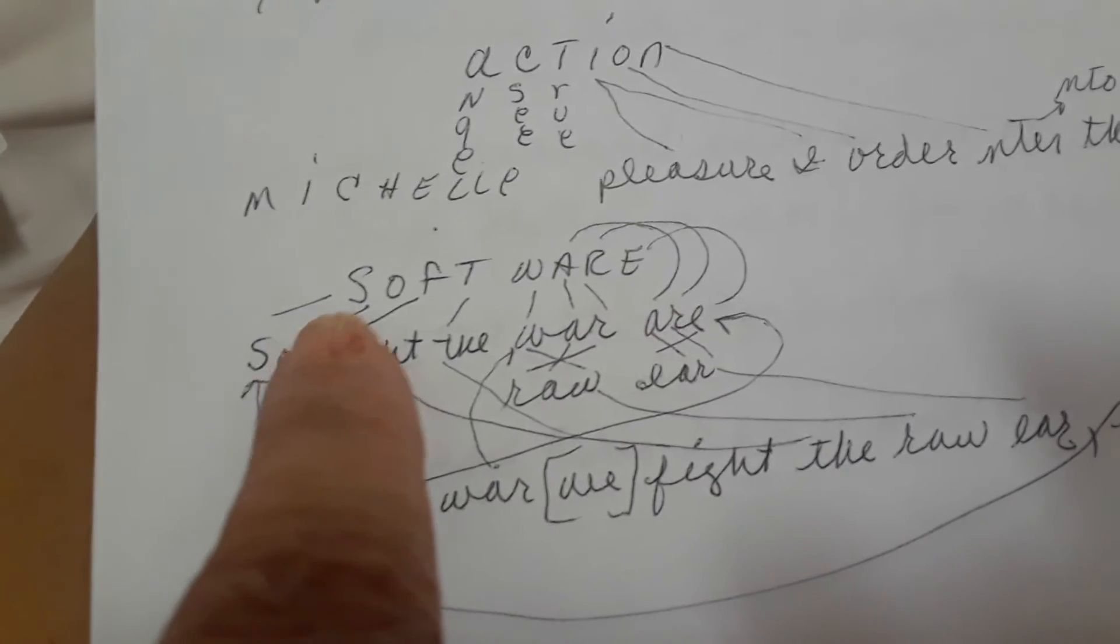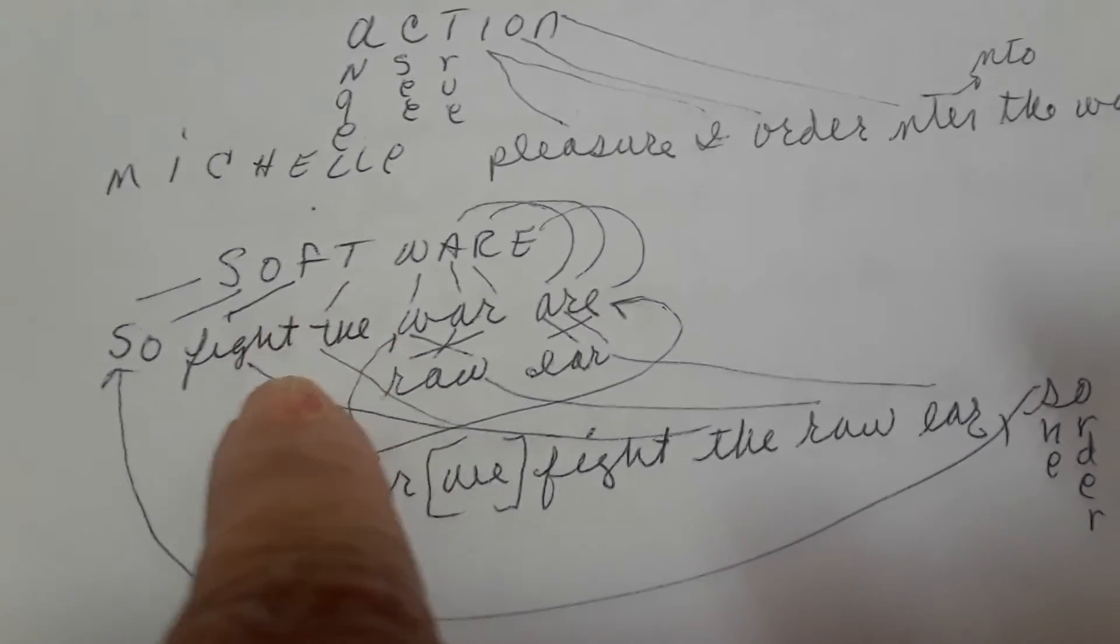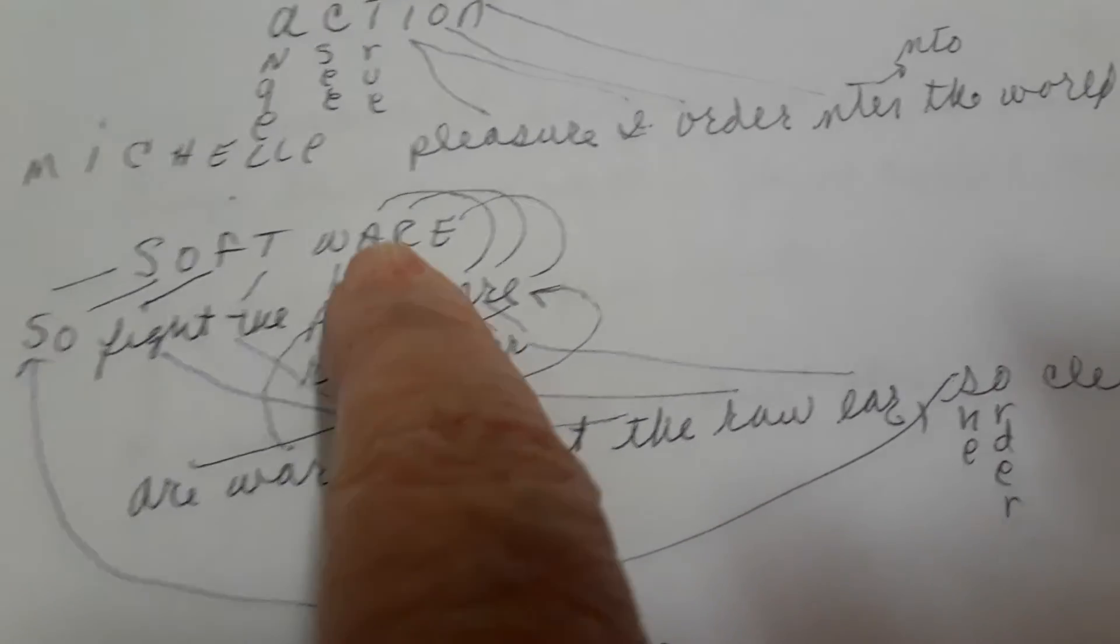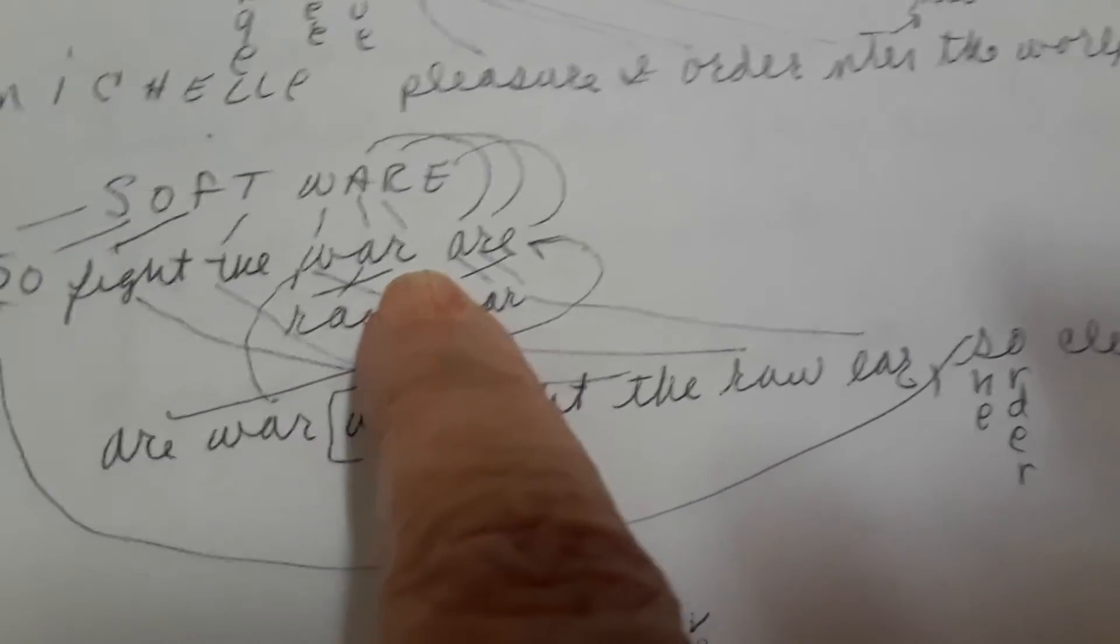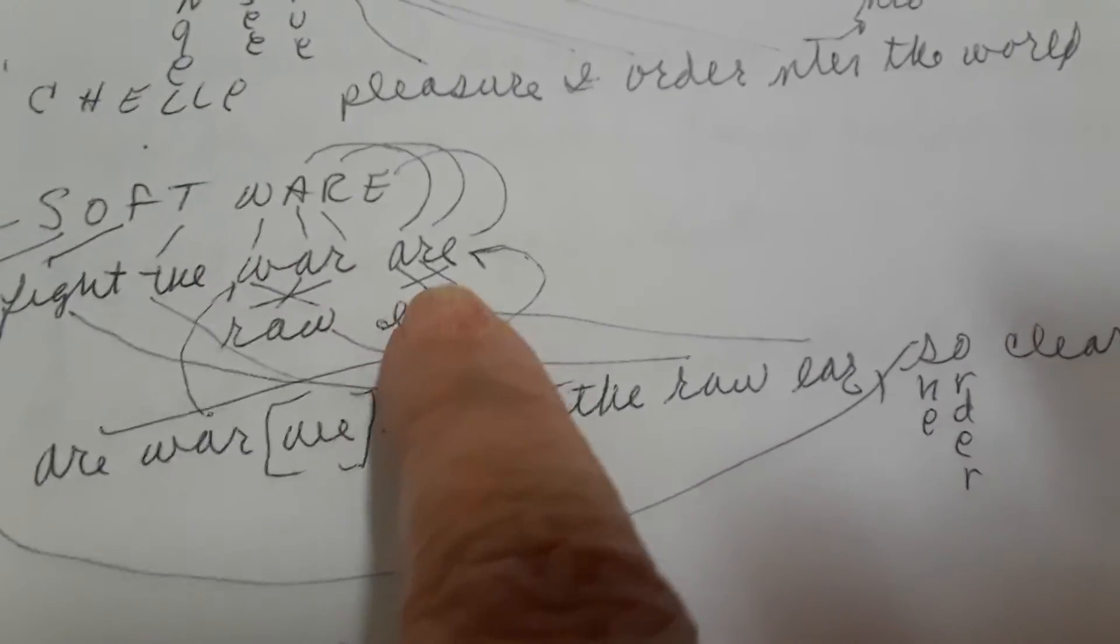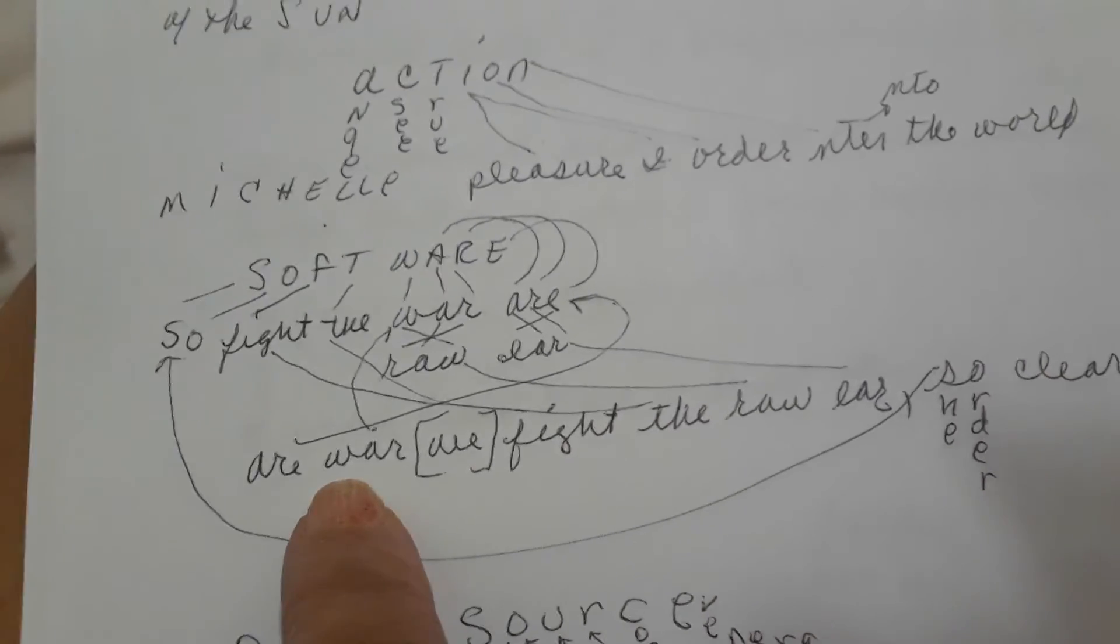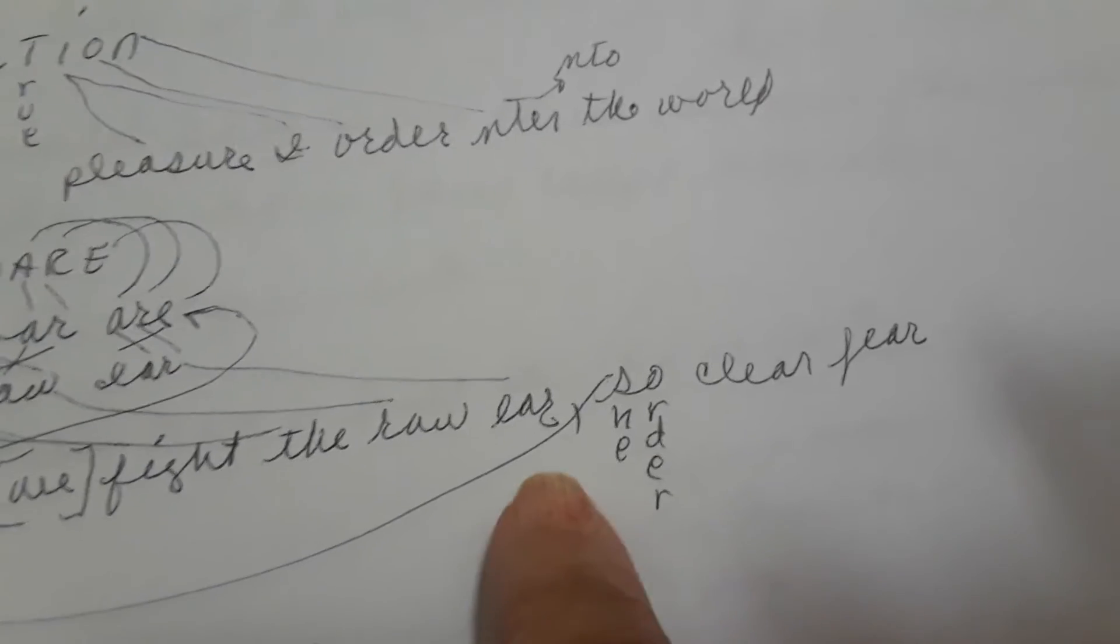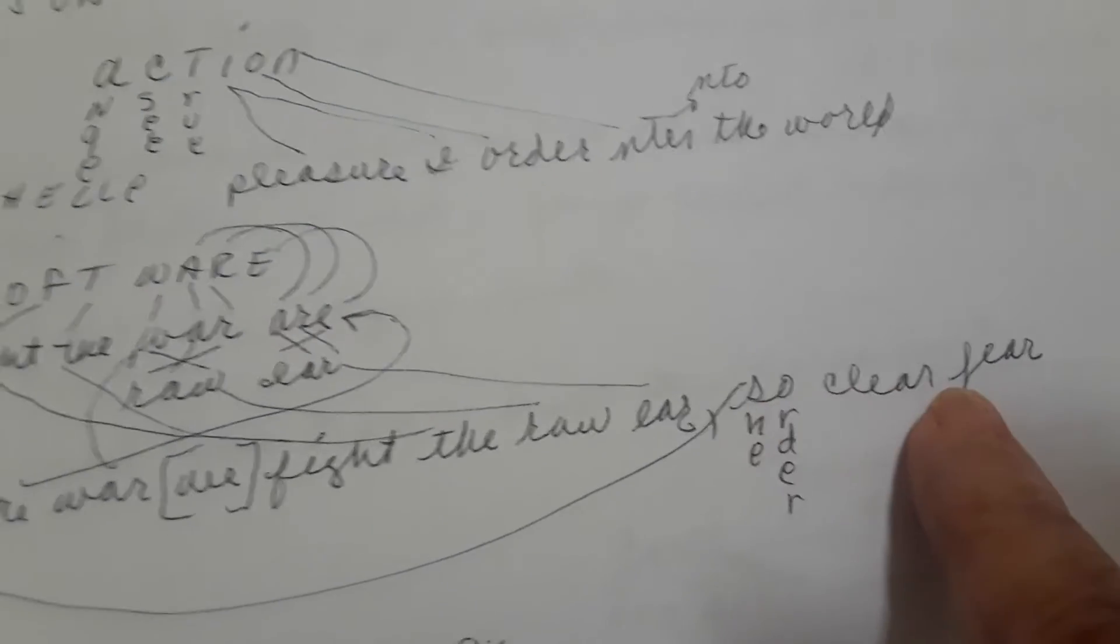Software. So for so, F for fight, war. These letters also spell raw and ear. Our war, we fight the raw ear. So she orders clear fear. Okay, clear fear because we're fighting a war. Don't be afraid. It's a culture war.